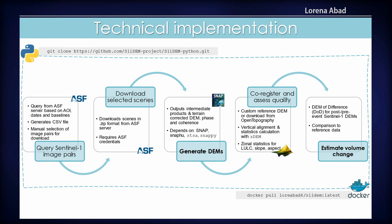Now, how do we technically implement this? This is a simplified workflow. Very simply, it's a translation of what I showed previously. You have Sentinel-1 image pairs — you query them, getting two image pairs that are close in time. Then you download the selected pairs and generate DEMs using SNAP. If you work with Sentinel-1, you're probably familiar with SNAP. We co-register and assess quality, because if you've tried to generate a DEM with Sentinel-1, the quality is not the best. Then we estimate the volume change.